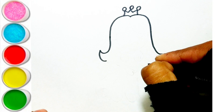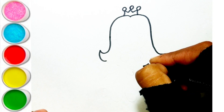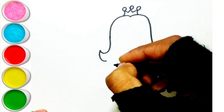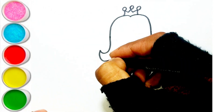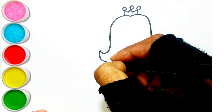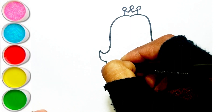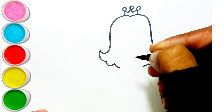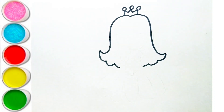M is for Mat. M-M-Mat. N is for Net. N-N-Net. O is for Orange. O-O-Orange. P is for Pet. P-P-Pet.